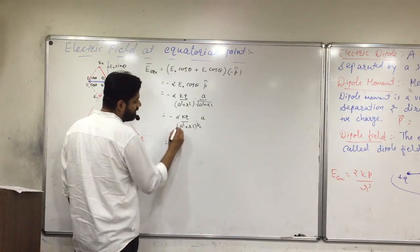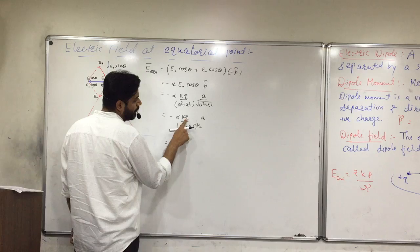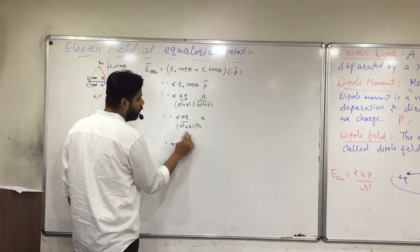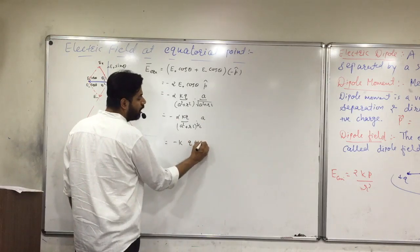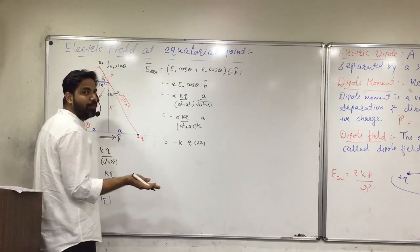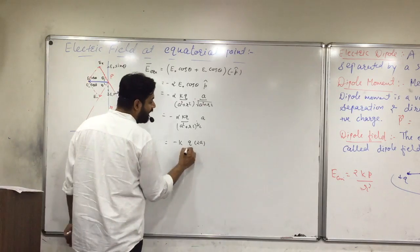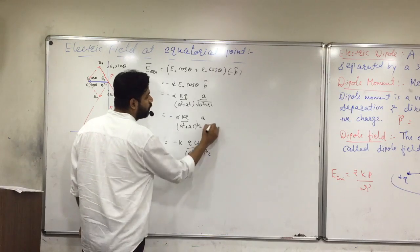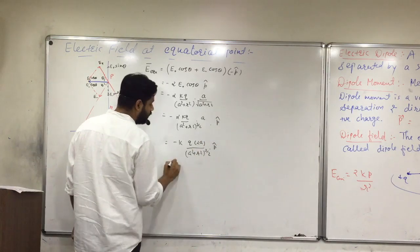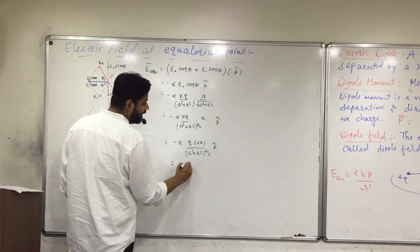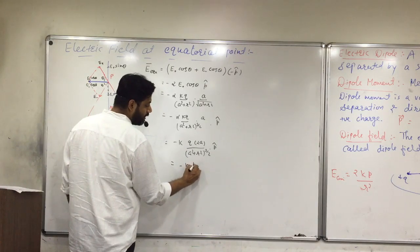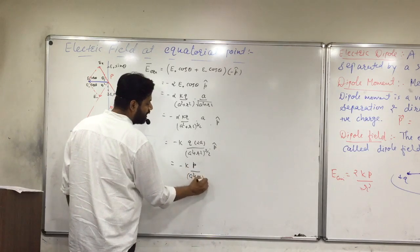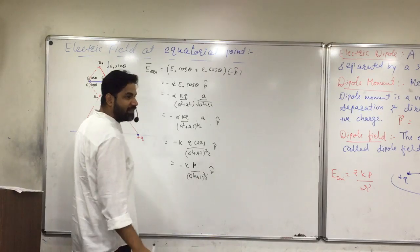This equals minus k times q times 2a divided by (a squared plus r squared) raised to 3/2, into p-hat. But q times 2a is the dipole moment p! So it becomes minus kp divided by (a squared plus r squared) raised to 3/2, into p-hat. Clear?